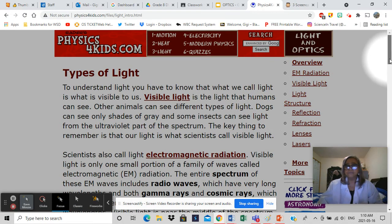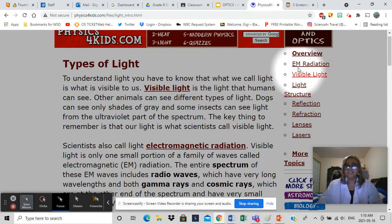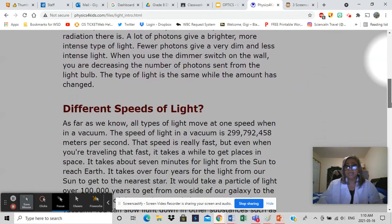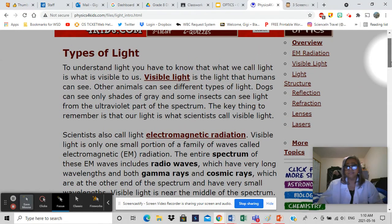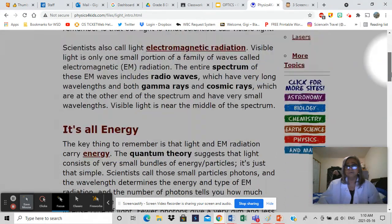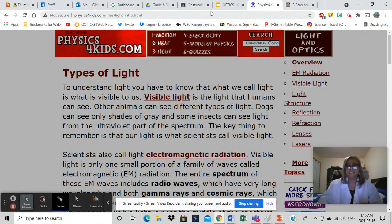So, I want you to go through the overview or the intro, EM radiation. EM stands for electromagnetic radiation. Something about visible light, light, its structure, and reflection, refraction, lenses, and lasers. So, I want you to just read through this. Take note of the words that are in boldface or highlighted. So, read through this. And what happens after that?